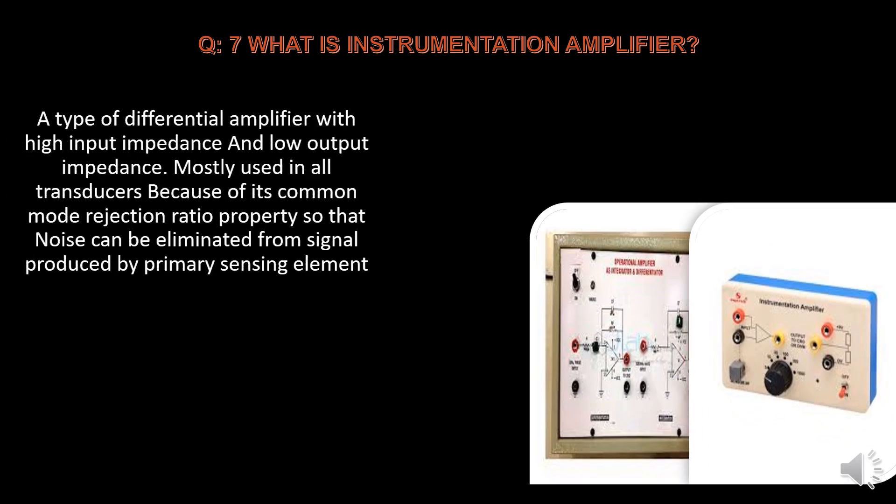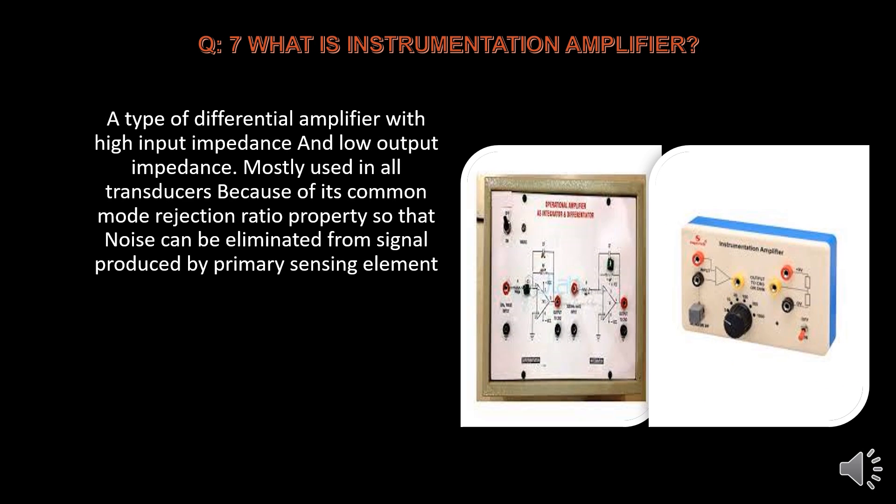What is an instrumentation amplifier? It is a type of differential amplifier with high input impedance and low output impedance, mostly used in transducers because of its common mode rejection ratio properties, so that noise can be eliminated from the signal produced by the primary sensing element.